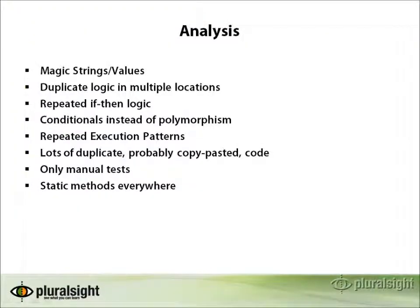A quick analysis of the code shows a number of problems with the Don't Repeat Yourself principle. These can be broken out into the following bullet points: the use of many magic strings or values throughout the code; duplicate logic showing up in many different locations; repeated if-then logic in some branches; use of conditionals instead of polymorphism; repeated execution patterns where the same several lines of code are executed with slight variation; and a lot of duplicate, most likely copy-pasted code. We also have only manual tests and there are a lot of static methods which can prove to be problematic.